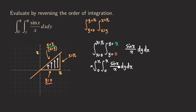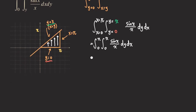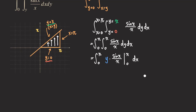Now we perform the inner integration with respect to y. Since there is no y in the integrand, we treat sin(x)/x as a constant, so integrating with respect to y simply gives y times sin(x)/x, evaluated from y equals 0 to y equals x. We plug in x and then zero — and we don't need to touch sin(x)/x.